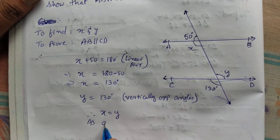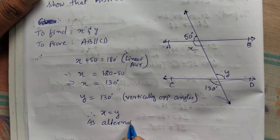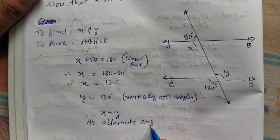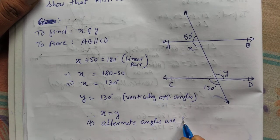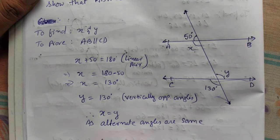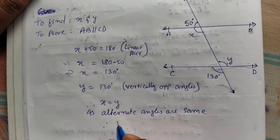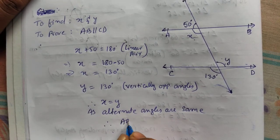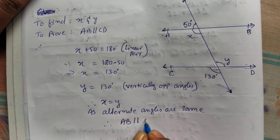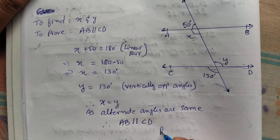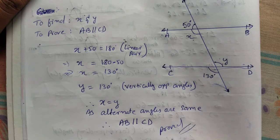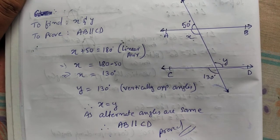You can write as alternate angles are same. Therefore, AB must be parallel to CD. Hence proof. You can pause the video to write the solution.